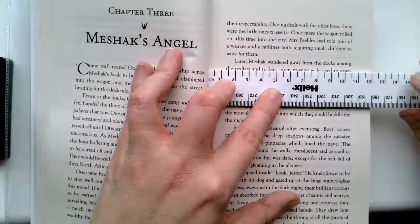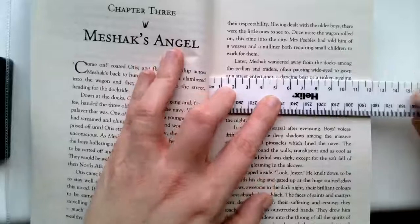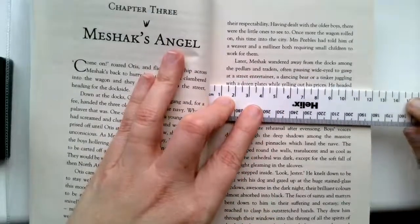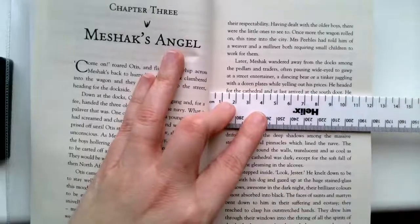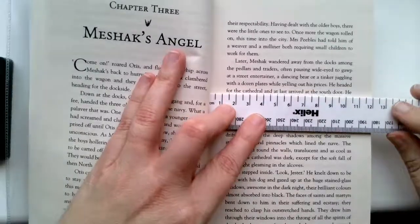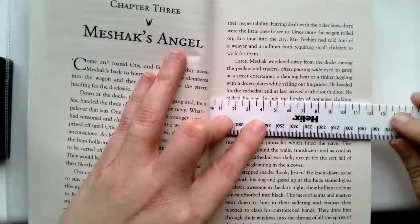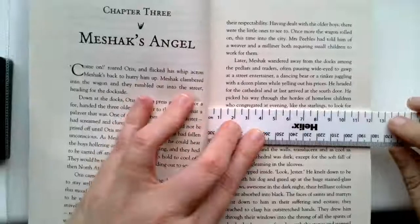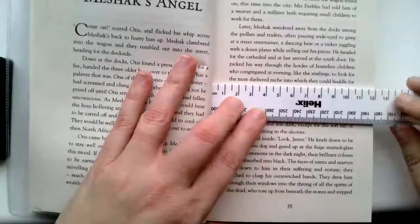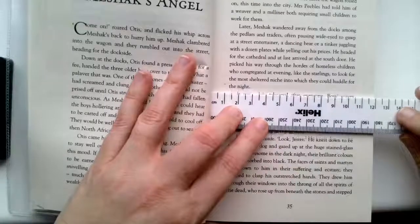Later, Meshac wandered away from the docks among the peddlers and traders, often pausing wide-eyed to gawp at a street entertainer, a dancing bear or a tinker juggling with a dozen plates while yelling out his prices. He had headed for the cathedral and at last arrived at the south door. He picked his way through the hordes of homeless children who congregated at evening like the starlings, to look for the most sheltered niche into which they could huddle for the night.